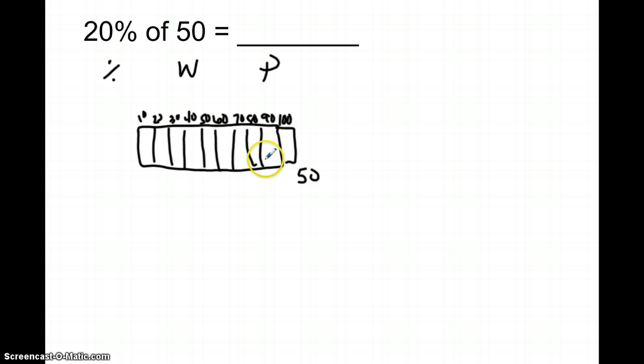Since it's separated into 10 equal parts, we take 50 and divide by 10 because it's 10 equal parts, so each piece is worth 5.